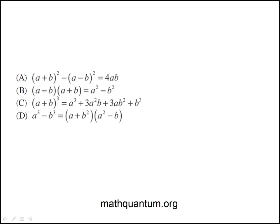We have to identify the statement that is not true for all real numbers a and b. Let's look at some of the familiar ones. I see the difference of squares — this is true for all values of a and b, so that one is out.